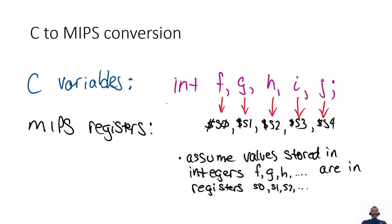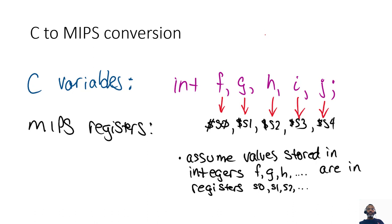In our C to MIPS conversions, we assume we have integer variables labeled F, G, H, I, J, and so on. When doing conversions, replace those variables with registers S0, S1, S2, S3, S4, etc. So when I ask you to do a conversion, just replace the variables and assume those values are stored in those particular registers.